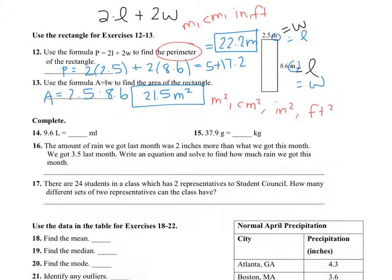Okay, 14 is conversions. 14 is 9.6 liters is how many milliliters. So you have to convert from liters to milliliters. So we know that there are 1,000 milliliters in 1 liter. So if there are 9.6 liters, then there are 9,600 milliliters. Because you're going to move the decimal over 3 times. It's 1,000.